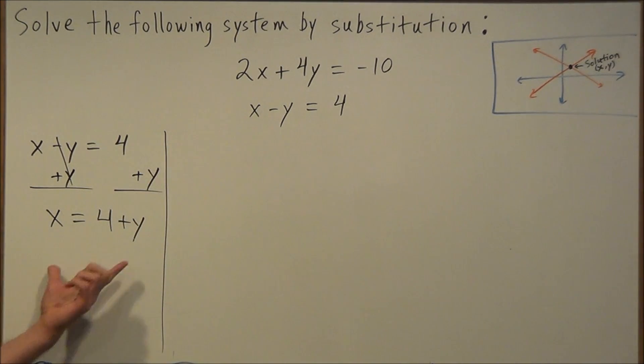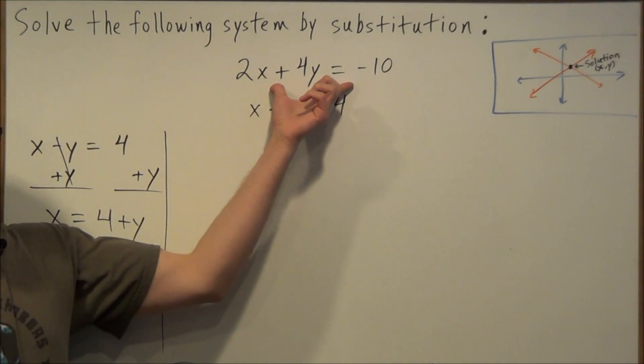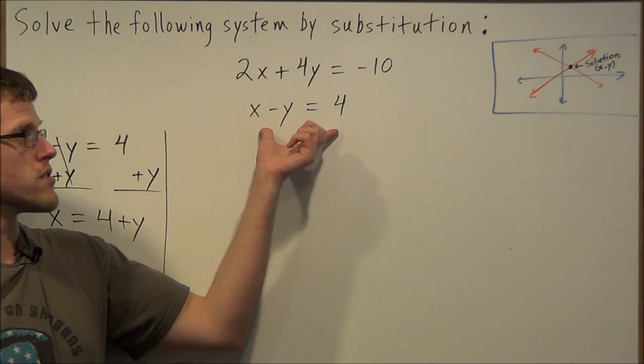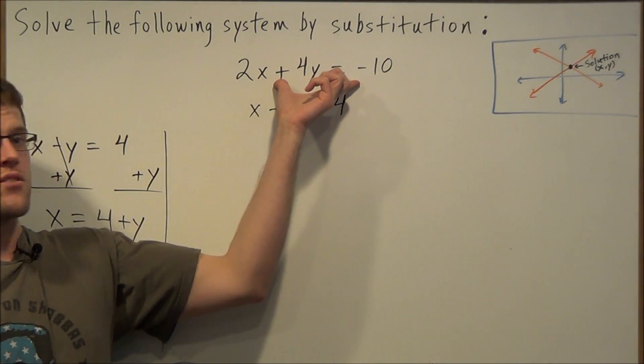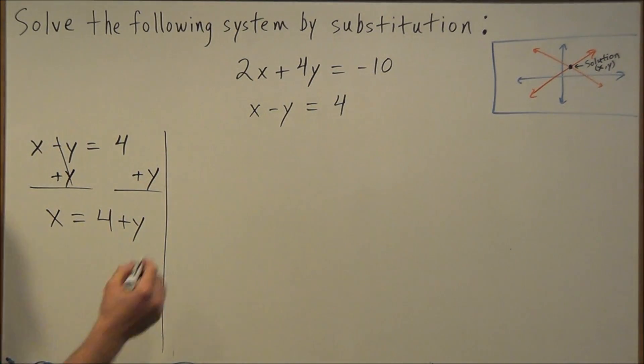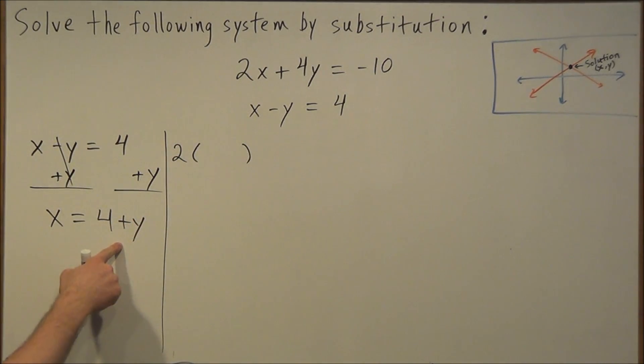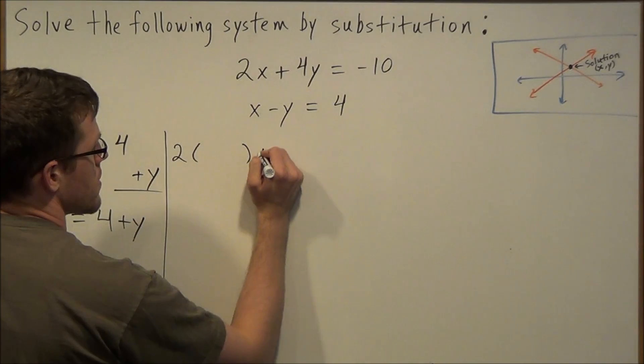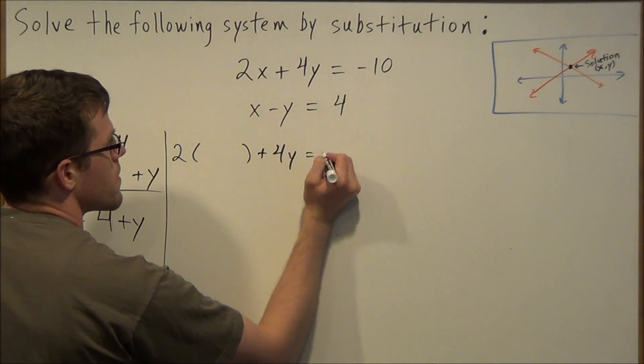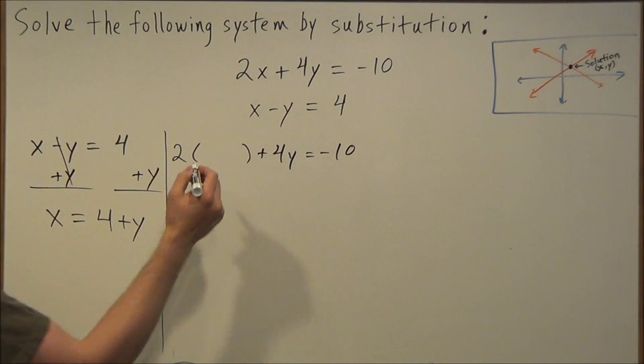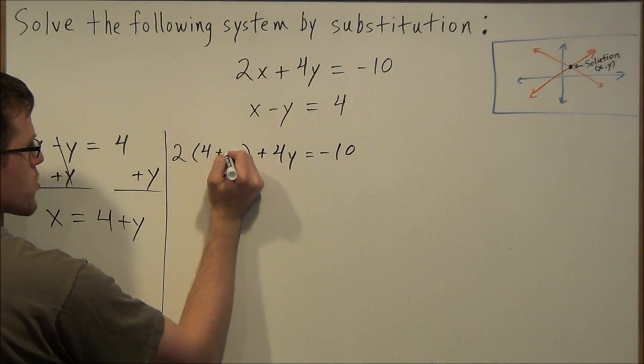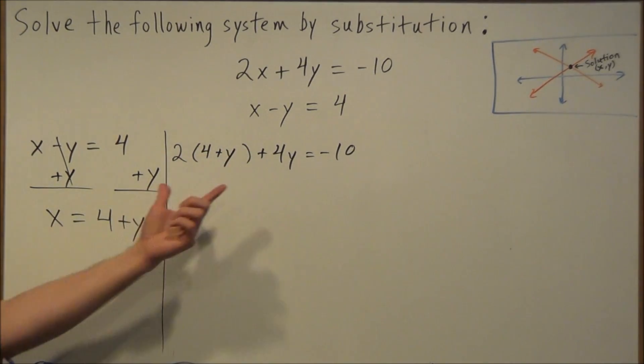So once we complete this step here, we're going to plug this result into the other equation. So we solved the second equation for x, so we're going to plug our results into the first equation. So we're going to replace x with what we just solved for, x equals 4 plus y. So what we're going to do here is we're going to replace the x with 4 plus y and solve this equation for the variable y.